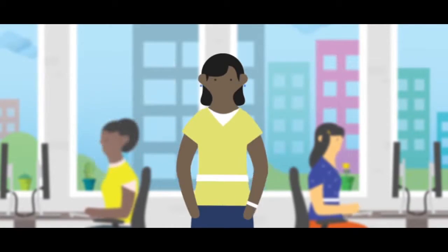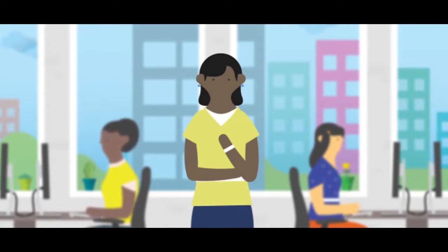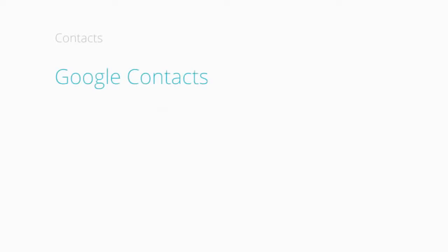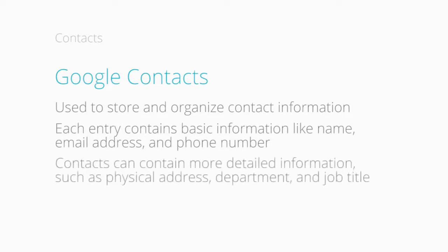We let her know that Google Apps has some great features already incorporated through Google Contacts. Google Contacts is a way to store and organize contact information about the people you communicate with. Each contact contains basic information like names, email addresses, and phone numbers. You can also include extended information like physical address, department, or job title through two different types of contacts within Google Apps.